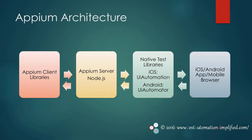APM server is written in Node.js. Client libraries are nothing but APM's extension to the WebDriver protocol. Client library examples include Java, Ruby, PHP, C#, and many more. Native test libraries are Google's and Apple's test automation frameworks provided for Android and iOS respectively.